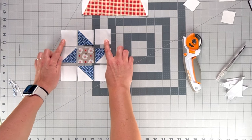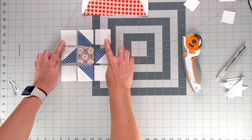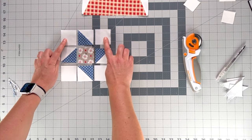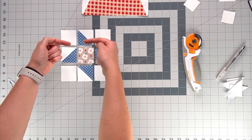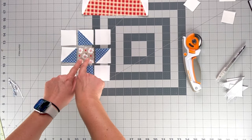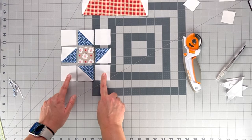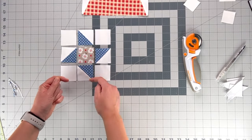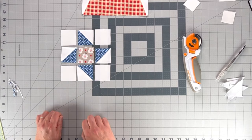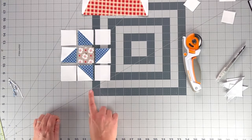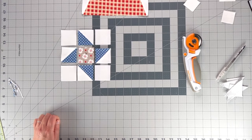And then when I press, I'm going to press the seams on this top row in. And then I'm going to press the seams on this row out. And then I'm going to press the seams on this row in so that when I assemble the rows of the block, you'll be able to nest those seams and it will turn out with beautiful points.